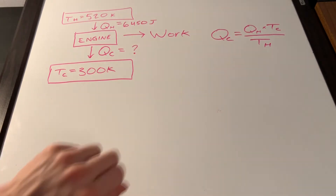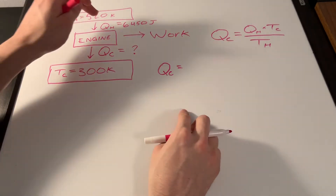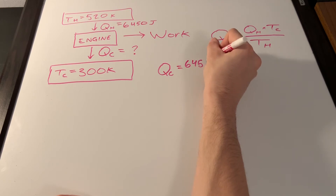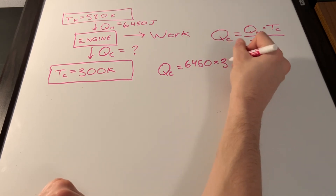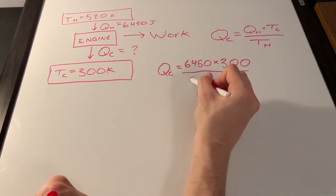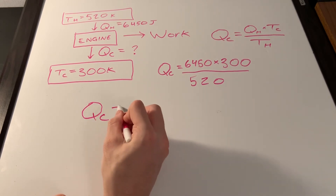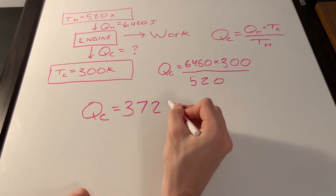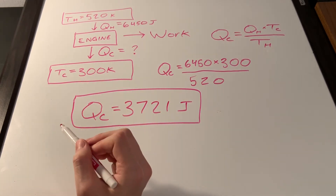Plugging in the values: Q sub c equals 6,450 joules multiplied by 300 Kelvin divided by 520 Kelvin. Putting this in the calculator gives a value of 3,721 joules. That's the answer to Part A.